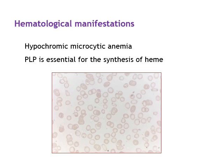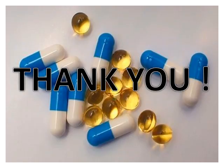Hematological manifestations include hypochromic microcytic anemia due to decreased heme synthesis, since ALA synthase enzyme — the first step of heme biosynthesis — requires PLP as coenzyme. This is all about vitamin B6; the key focus should be on its biochemical functions and deficiency manifestations.